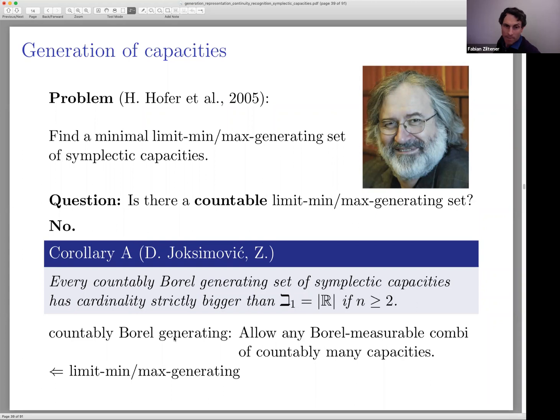The proof follows from two main results of the PhD thesis. The first part says the set of all capacities has cardinality ℶ₂ — the cardinality of the power set of the reals — in at least dimension four. The second part says: if a set of functions to [0, ∞] has cardinality at most ℶ₁, then the set it countably Borel-generates also has cardinality at most ℶ₁. This second part is general, elementary, and uses transfinite induction on the Borel sigma-algebra of a separable topological space, which has cardinality at most ℶ₁.